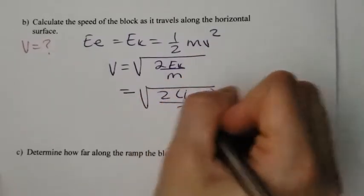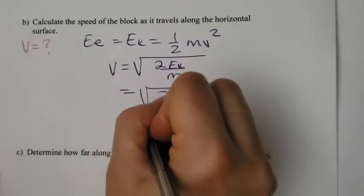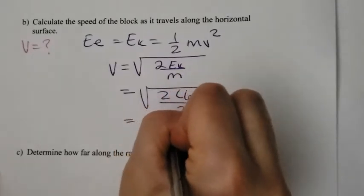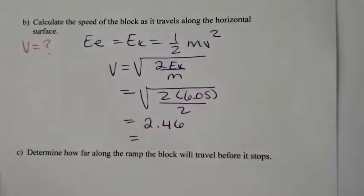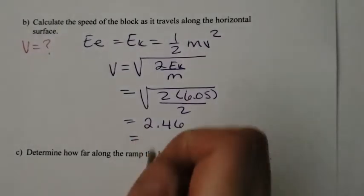And our mass was 2. When you put all that into your calculator, you end up with 2.46. We're going to round that to 2.5 meters per second.